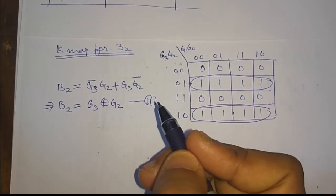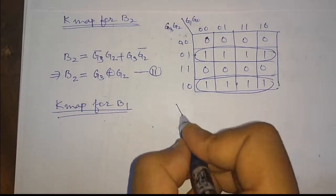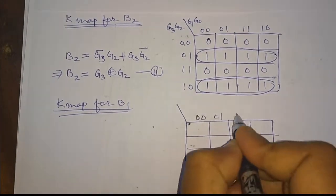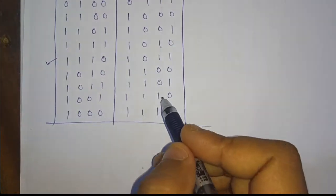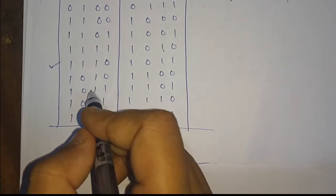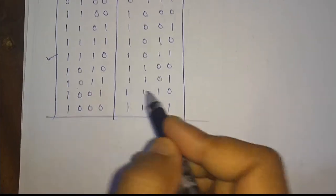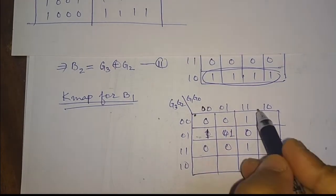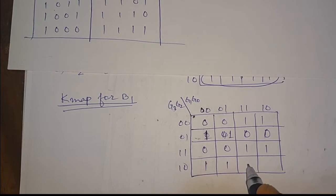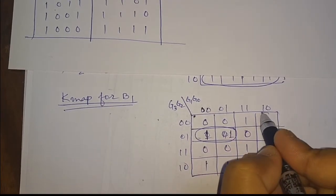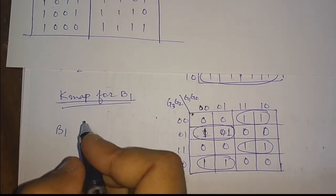Now we will make the K-map for B1. We place the B1 values, and for each B1 value we look at the respective gray code input. For example, for a B1 value of zero, the respective gray code is 1 0 1 1. In this way we evaluate the Boolean functions and get the expression for B1 from the K-map.